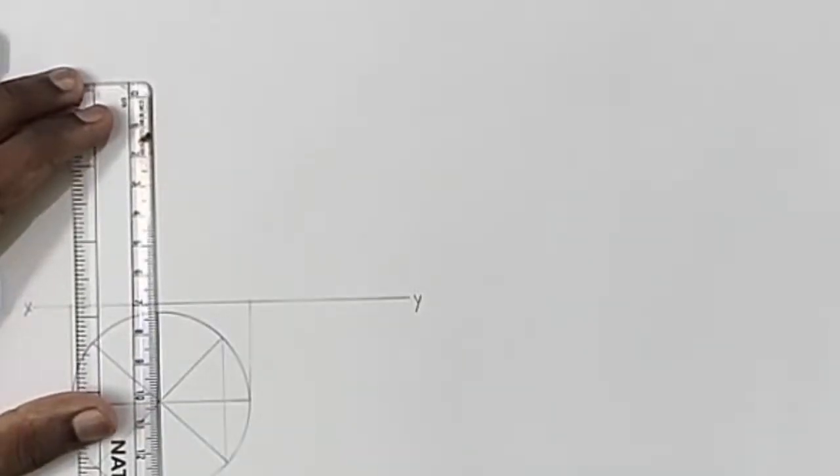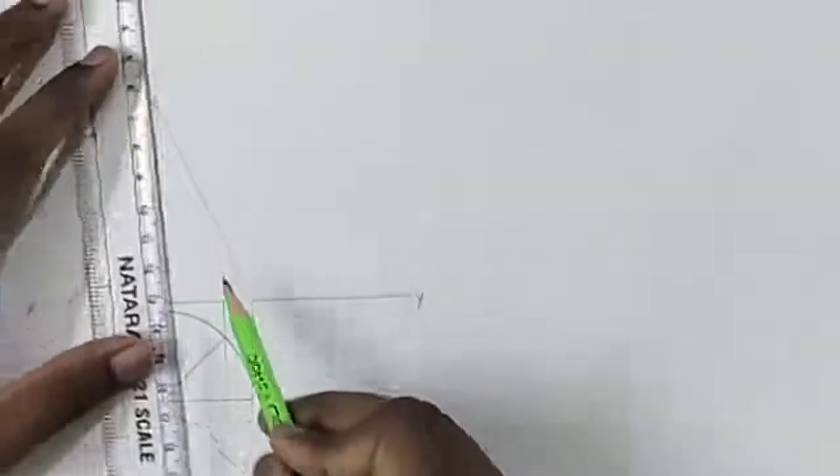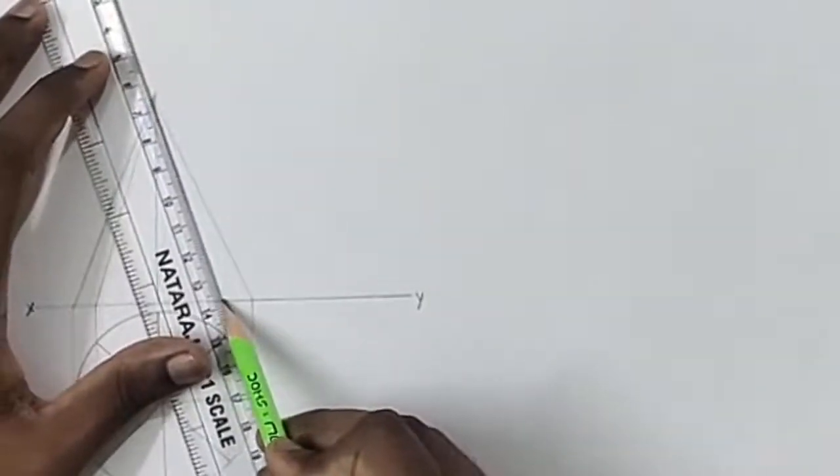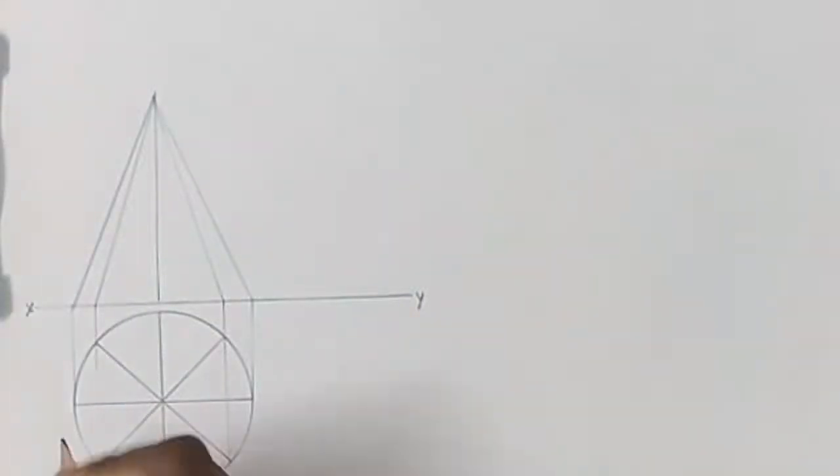Draw the height as 70mm and draw the generators. Now name all the points.